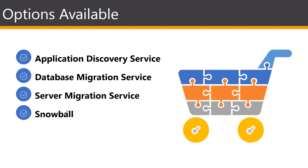AWS actually provides a Migration Hub, which is a single location to track the progress of application migrations across multiple AWS and partner solutions. This hub allows you to choose the AWS and partner migration tools that best fit your needs while providing visibility into the status of migrations across the portfolio of applications.